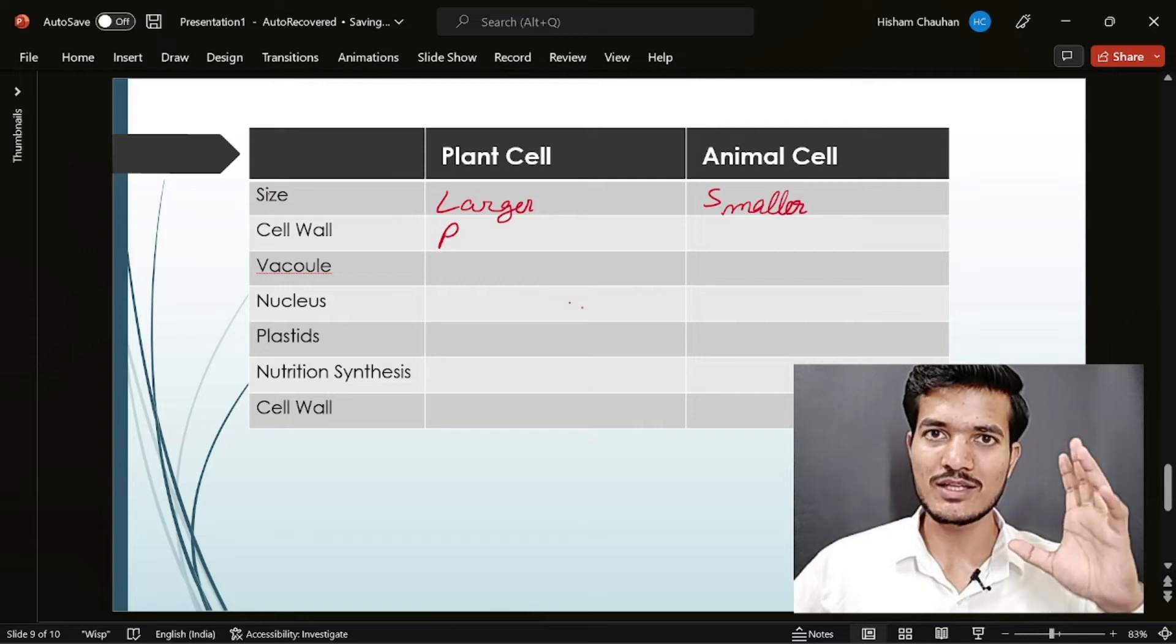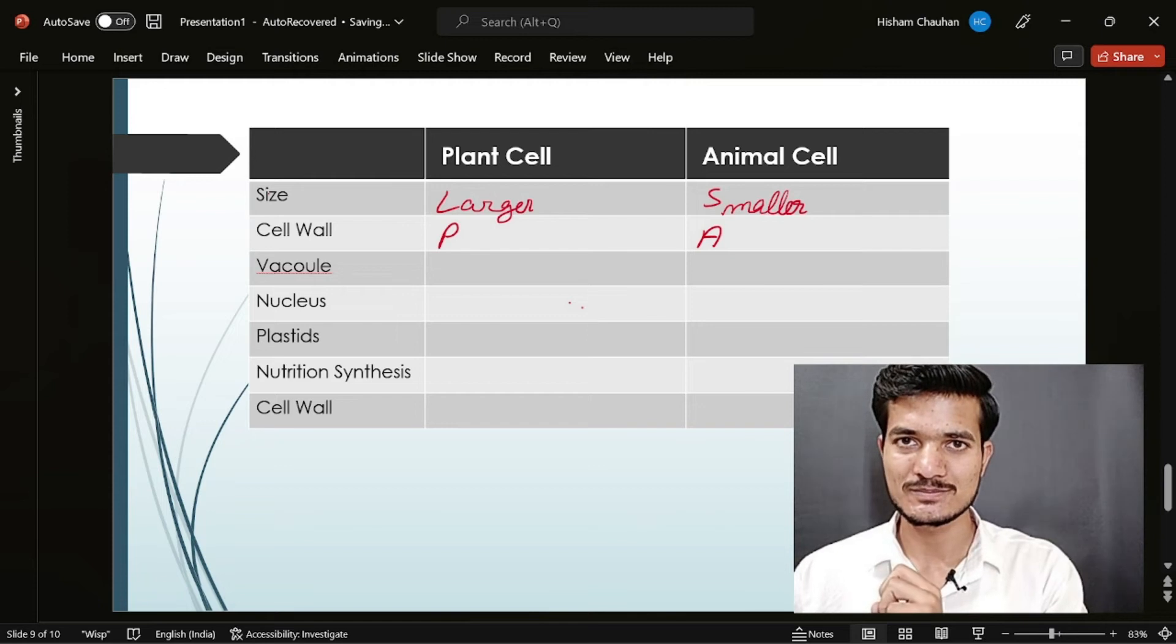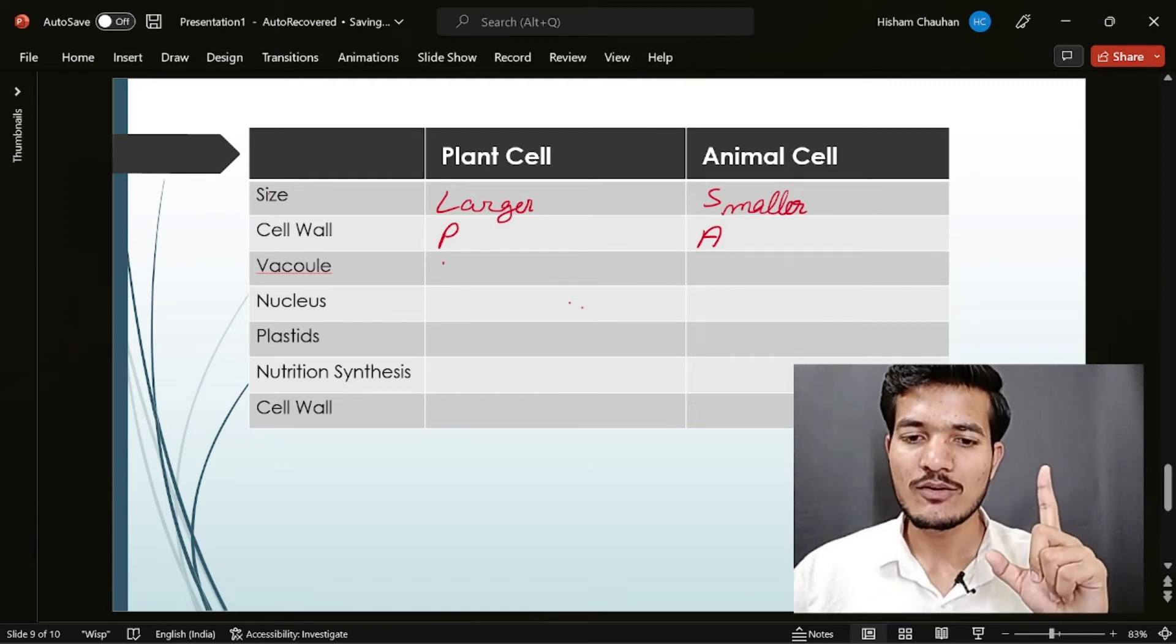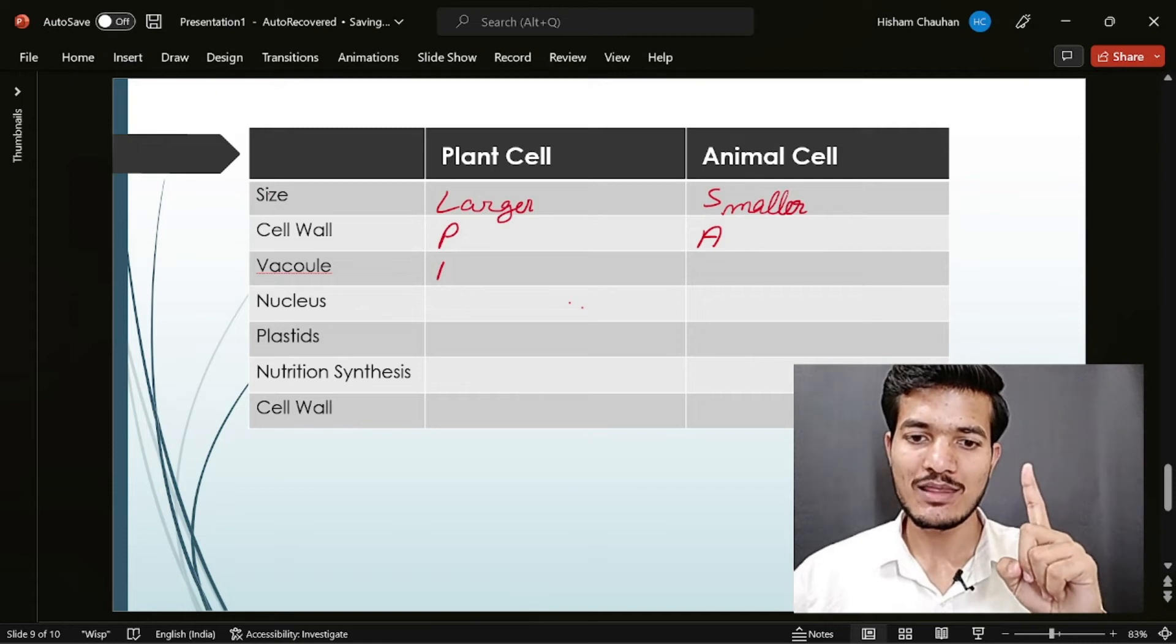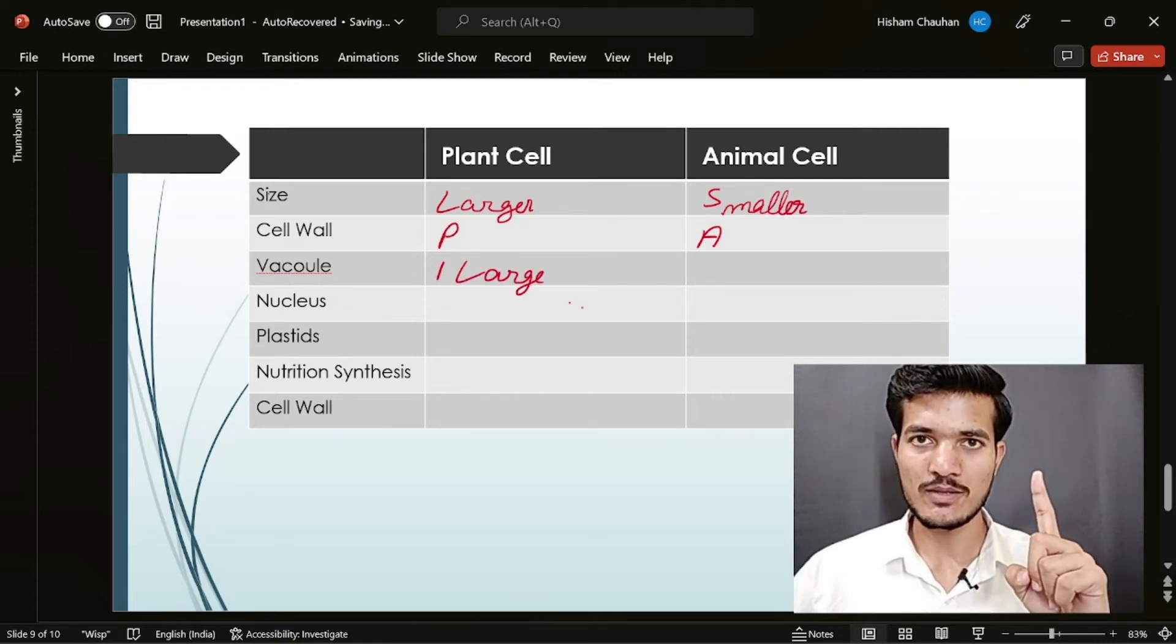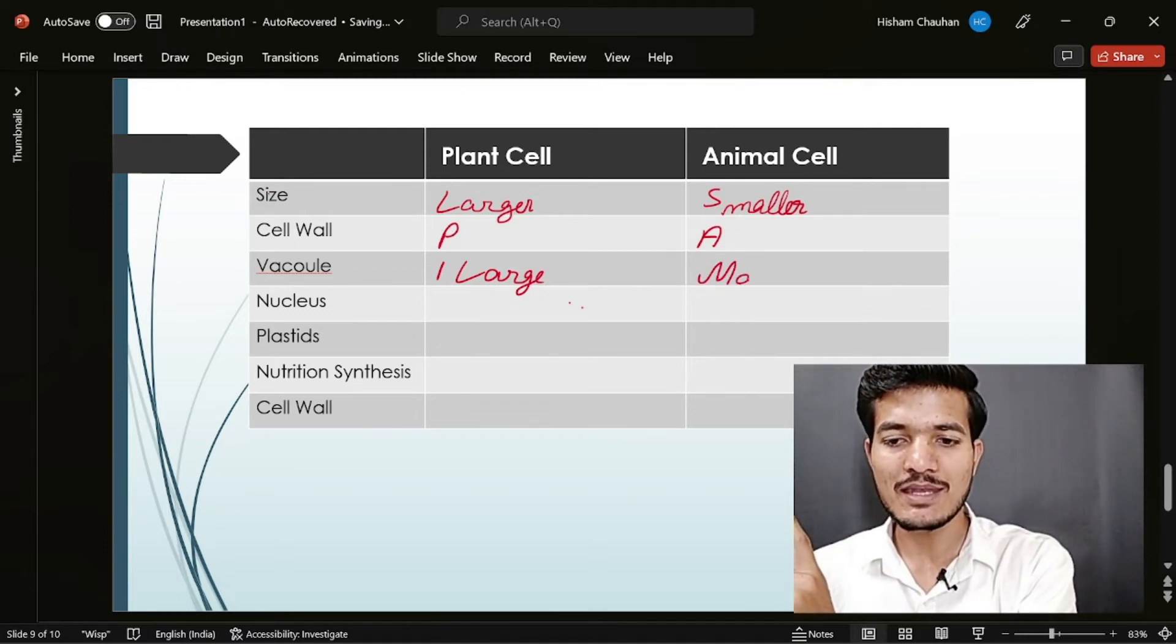Vacuole. Vacuole was one in the plant cells and it was large. Okay, and in the case of animal cells, there were many vacuoles but small.